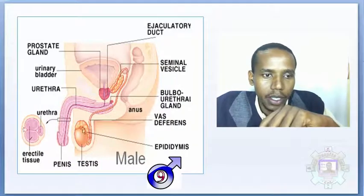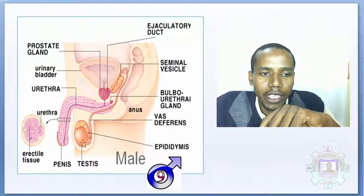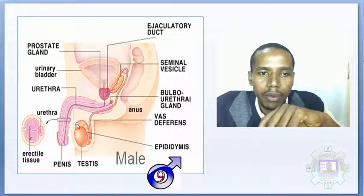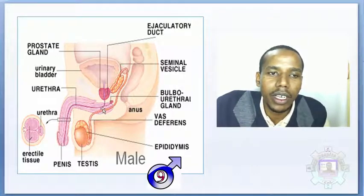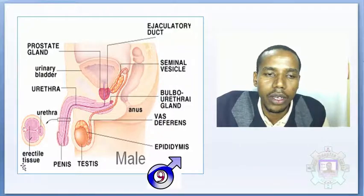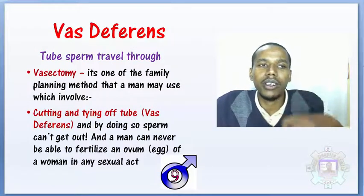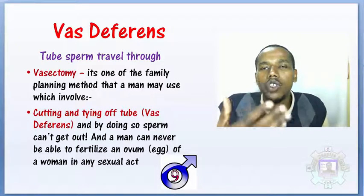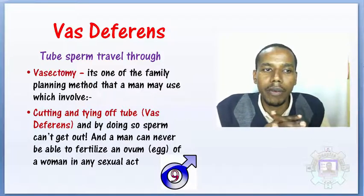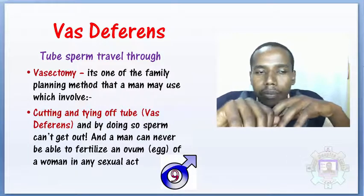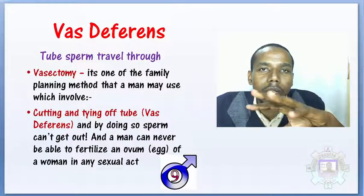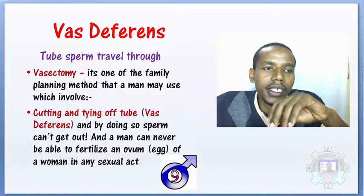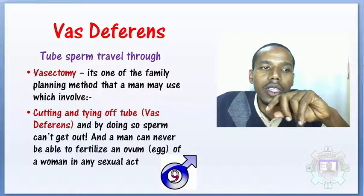Sperm is made in the testicle and temporarily kept in the epididymis. From there it travels using the vas deferens, going up and joining the urethra. The vas deferens is the sperm duct — the tube through which sperm travel.